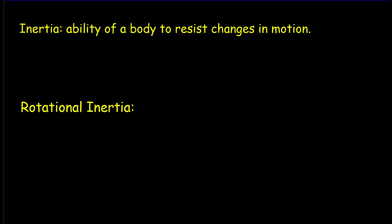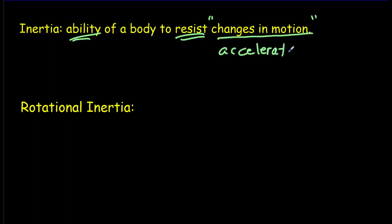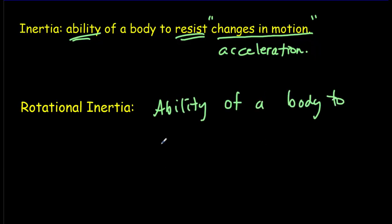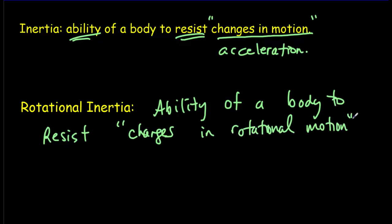Not so long ago, we talked about inertia and Newton's first law. We defined inertia as the ability of a body to resist changes in motion — and another word for changes in motion is acceleration. Now we're talking about rotational inertia. This doesn't just depend on mass, but also on how far that mass is distributed from the axis of rotation. It's defined the same way: the ability of a body to resist changes in rotational motion, which we can also call angular acceleration.